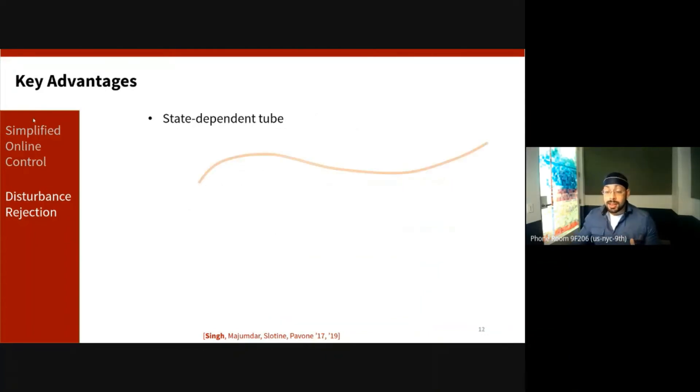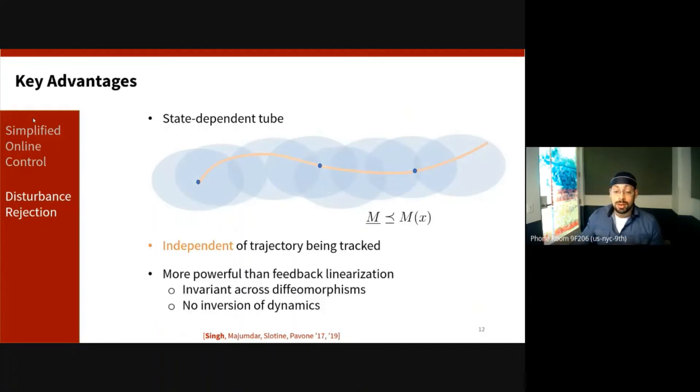And so what this basically means is now that at every single point in time around our trajectory, we can imagine that this Riemannian energy-based ball encapsulates all the states in which our state is guaranteed to lie in as we're trying to track our motion-planned trajectory in the presence of disturbances. Since this is a state-dependent ball because the Riemannian energy is a state-dependent metric, this is not very computationally useful for doing things like collision checking in motion planning, so we simply upper bound this using a fixed-size ellipsoid.